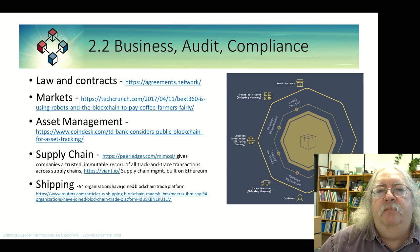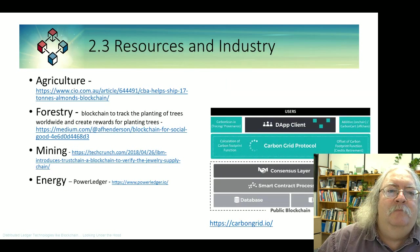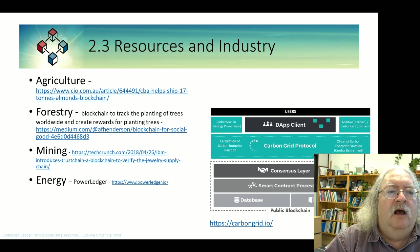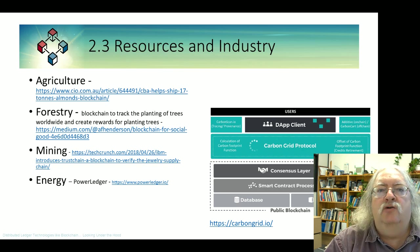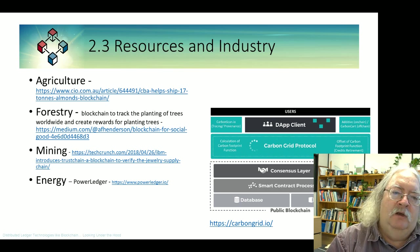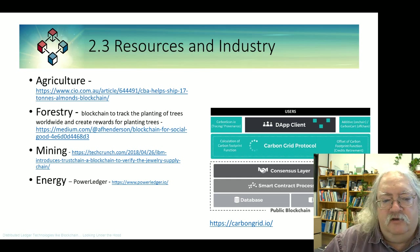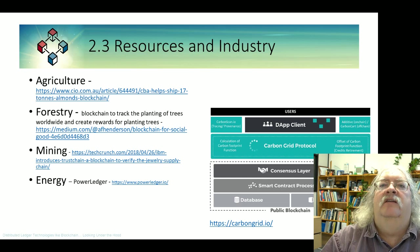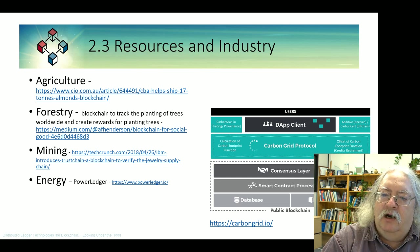Similar applications apply to shipping — both parcels and entire ships. Resources and industry are looking at applications as well. In agriculture, there's an example of a blockchain being used to track an almond shipment. In forestry, keeping track of the actual planting of trees by forestry companies using blockchain. In mining, a very common case study is using blockchain to track the provenance of diamonds to make sure they're not conflict diamonds. And for distributed power creation and consumption, you need a distributed database where all people in the network need reliable, trustworthy records.